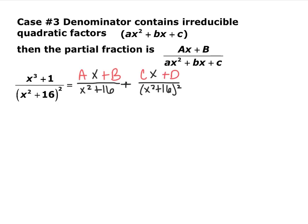All previous cases had linear denominators; one degree less gives a constant numerator. Now with a quadratic denominator, one degree less means the numerator is linear. So the numerator is always one degree less than the denominator. I also included the repeated version here, so you have every power up to whatever power appears in the denominator: x squared plus 16, and x squared plus 16 quantity squared.